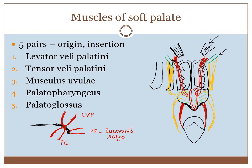The action of levator veli palatini, as its name suggests, is to elevate the palate. The tensor veli palatini arises from the scaphoid fossa of the medial pterygoid plate, from the lateral fibrous lamina of the cartilaginous part of the auditory tube, from the sulcus tubae, and from the spine of the sphenoid. As it descends for insertion, it winds around the pterygoid hamulus of the medial pterygoid plate, then forms a tendon that flattens into the palatine aponeurosis.